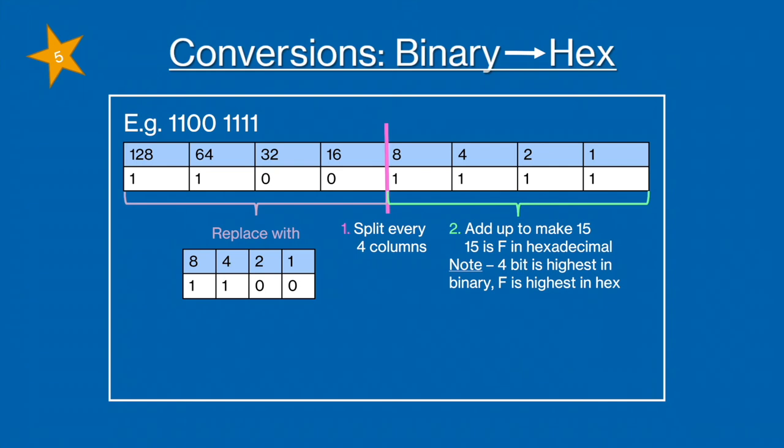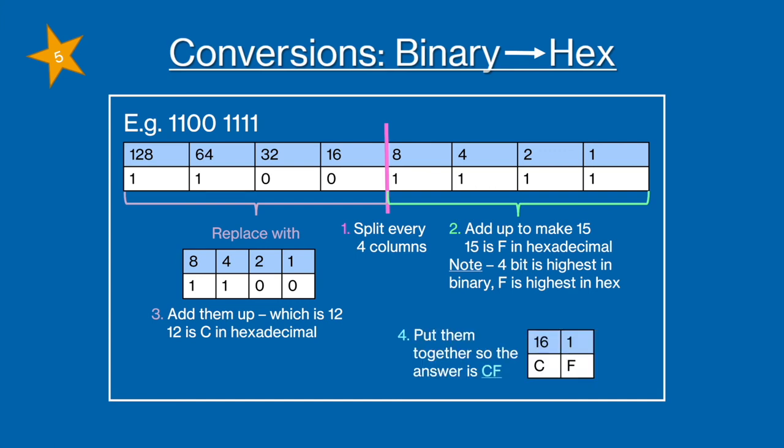Then we're going to add the values where there is a 1. So do 8 plus 4 which is 12 and as 12 is C in hexadecimal that's the value we're going to use. And then we're just going to put them together for our last step. So your answer is CF.